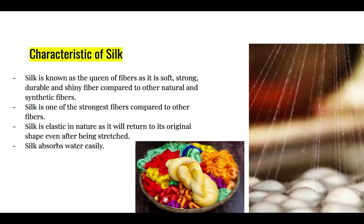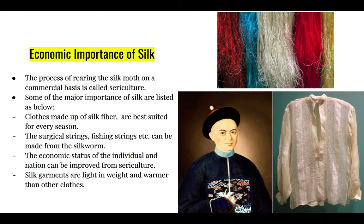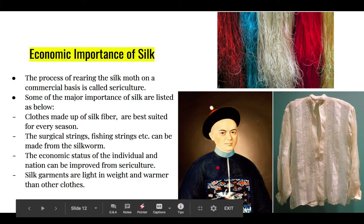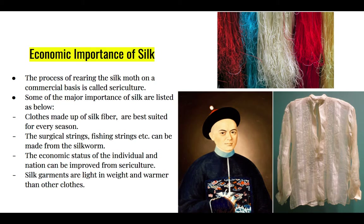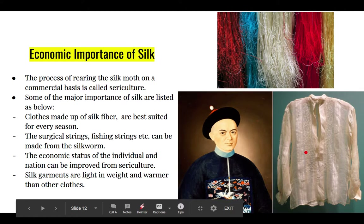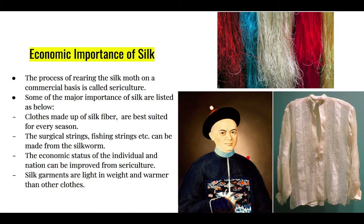Silk is also known as the queen of fibers because it is soft, strong, durable, and shiny. It is very elastic in nature and can absorb water very easily. The clothes made from silk fiber are suitable for all climates and all seasons — in summer it gives a feeling of coolness and in winter a feeling of warmth. Silk fiber is also the strongest natural fiber; it can be used to make strings for fishing or for surgical purposes.